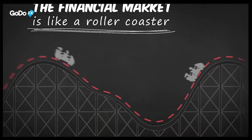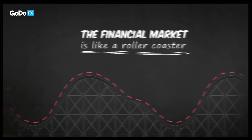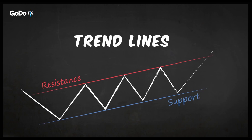Well, before you join the ride, you need to be able to recognise the two types of trend lines: a resistance line and a support line. But how and where to find them? We'll show you in the next few minutes.